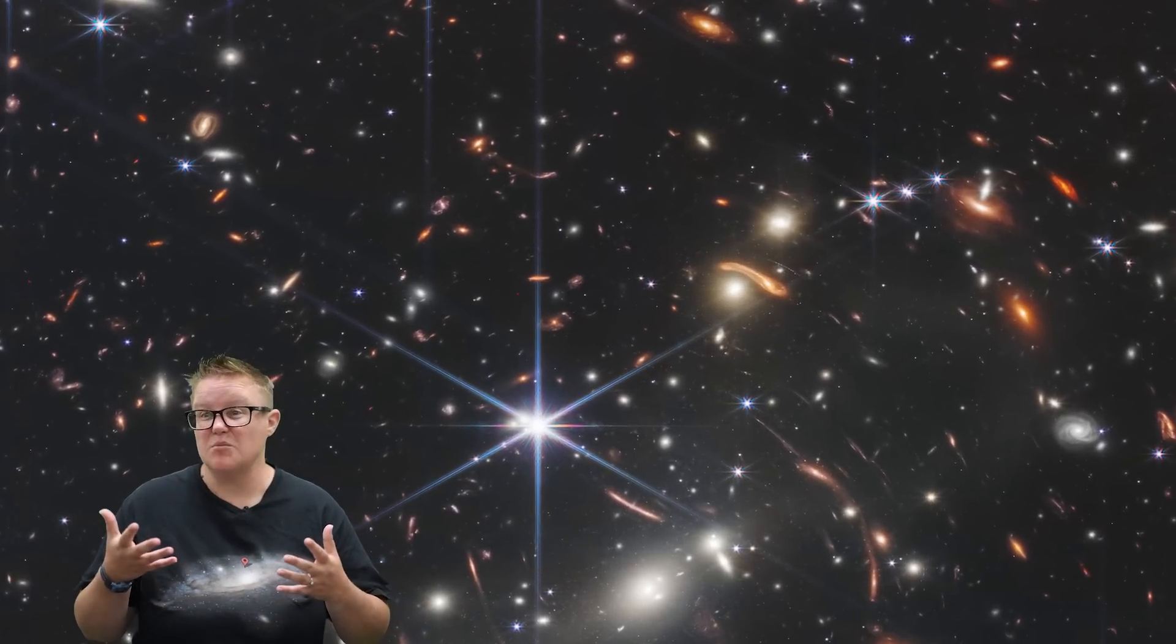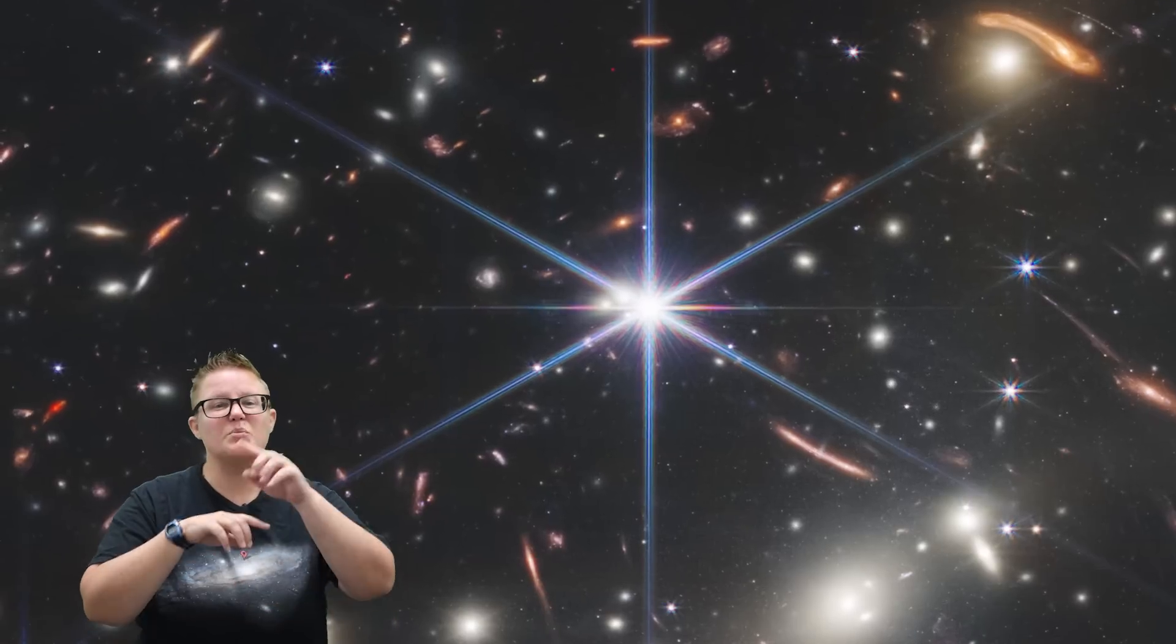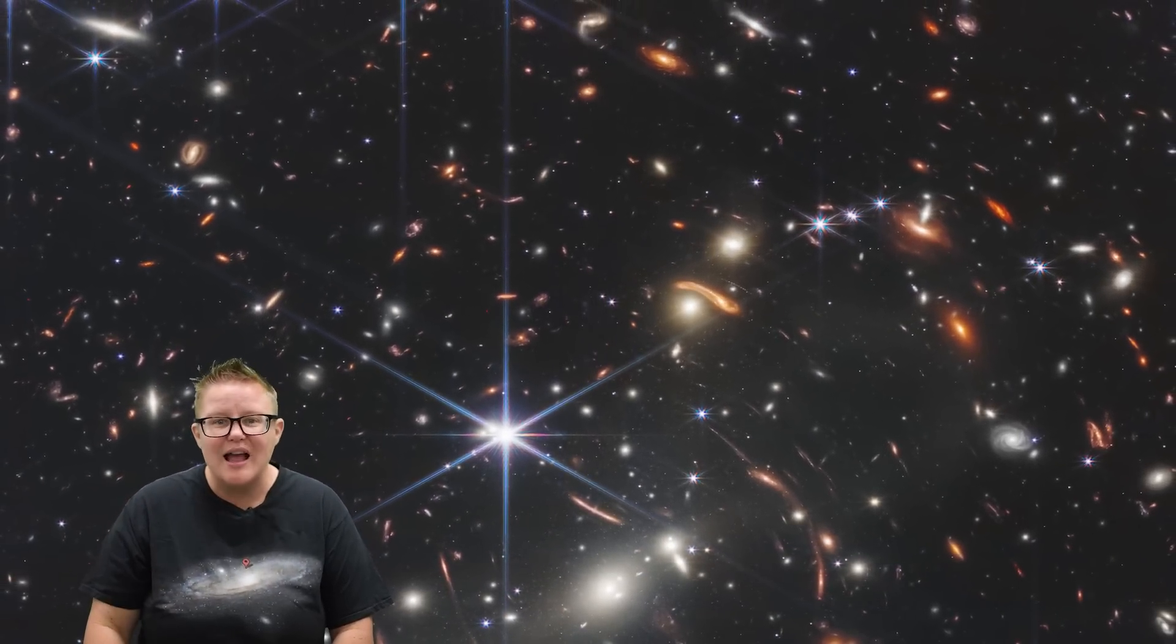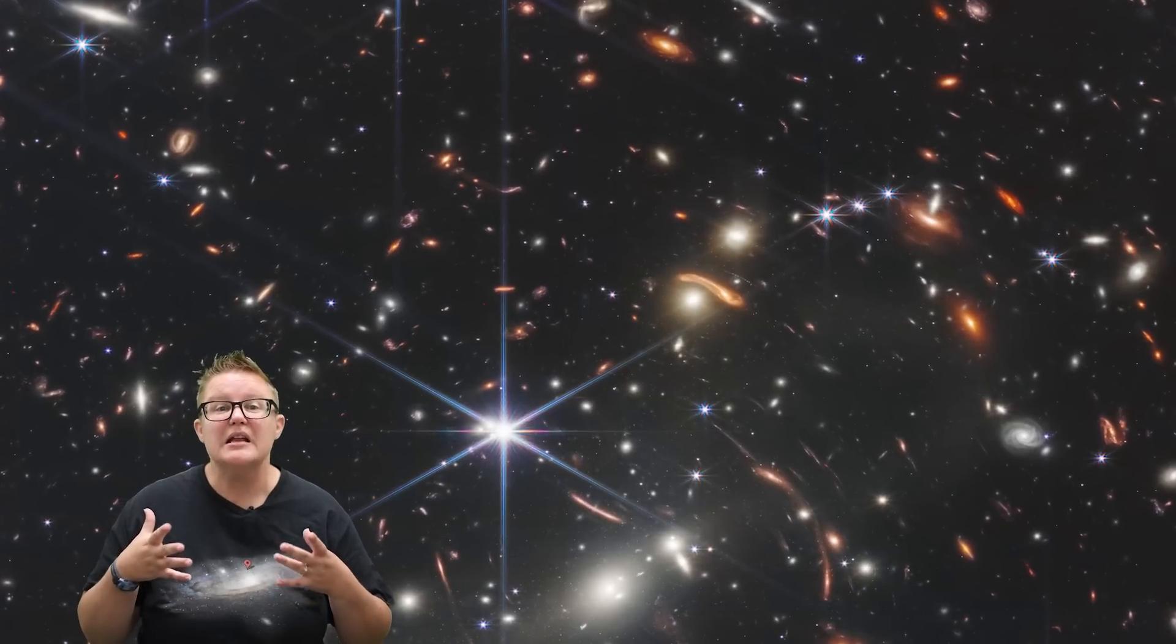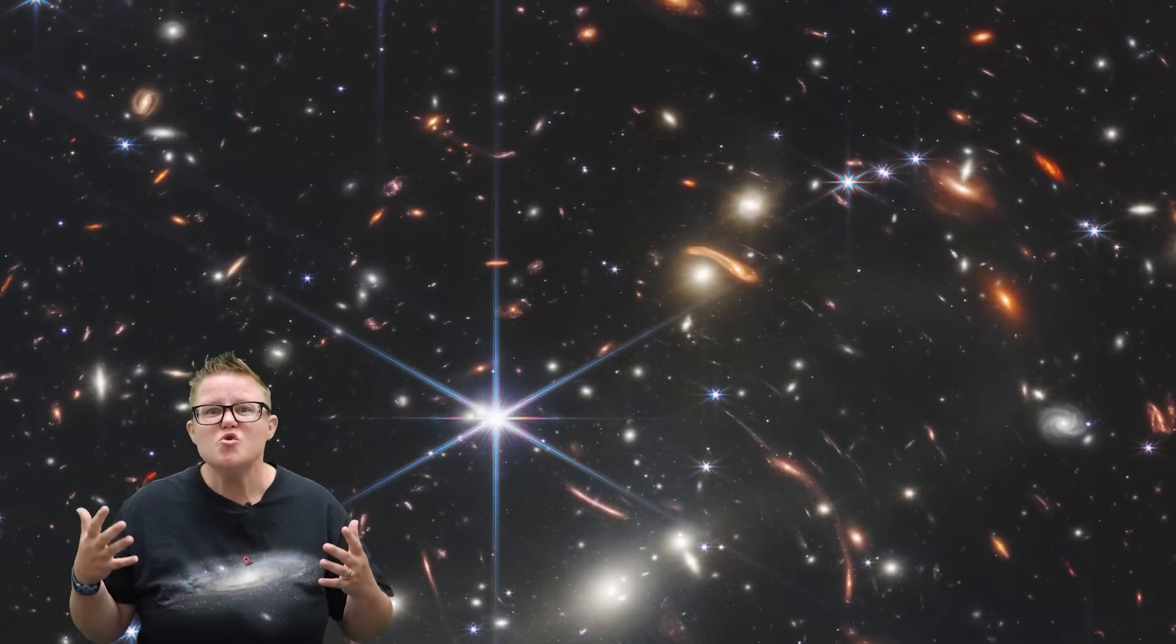Almost everything we're seeing in this image is a galaxy. You will see a couple of stars with the spikes coming up, they're called diffraction spikes. All of these other objects you see besides those few stars are galaxies. Each one of those contain hundreds of millions of individual stars. Each of them are incredibly far apart, and they're huge.